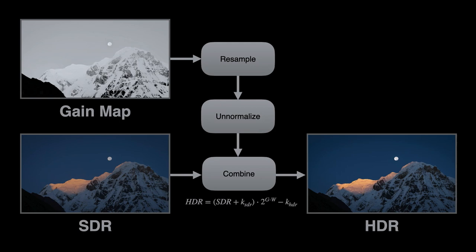That's where the metadata comes in. Using the minimum and maximum values from the metadata as well as the gamma, we apply the inverse transform and get the gain map back to its logarithmic representation.